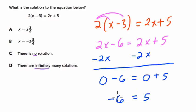Well, can this be true? No. Negative 6 can't equal 5, and 5 can't equal negative 6. When this happens, that means there's no value of x that will satisfy this equation.